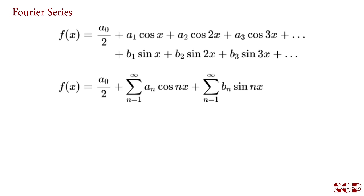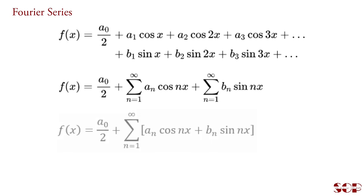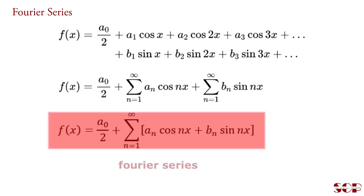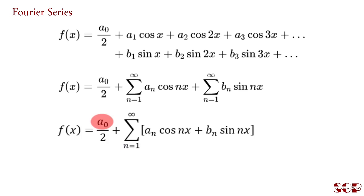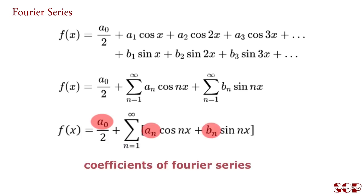If we take the summation sign common for both terms, then f(x) = a0/2 + summation n=1 to infinity of (an cos nx + bn sin nx). This is known as the Fourier series. The series contains trigonometric functions, so it is also known as the trigonometric form of Fourier series, where a0, an, and bn are known as the coefficients of the Fourier series. The values of these coefficients are required to expand any function.